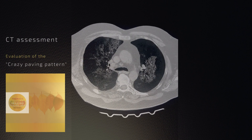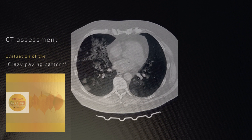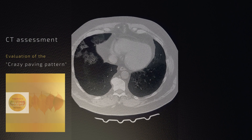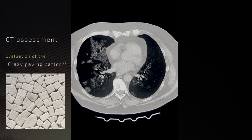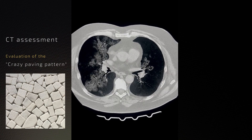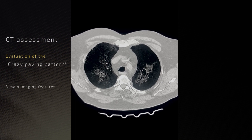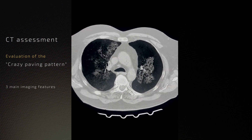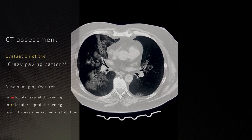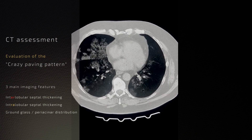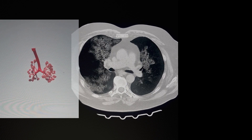In this video we're going to analyze a classically described CT pattern traditionally known as the crazy paving pattern. For this pattern there are three specific distinct features that should be present, as shown on this CT scan. We will need to understand the anatomy of the lung to further understand this pattern.